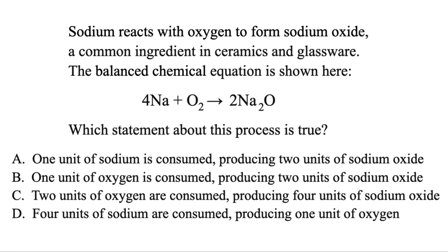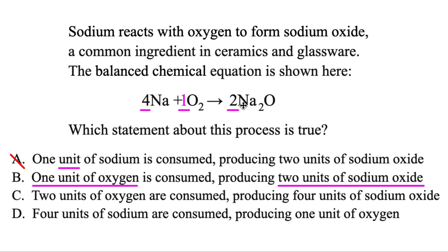Here we're given a chemical reaction. We have sodium — that's the first thing. It reacts with oxygen, the second thing. And it forms sodium oxide. But they're all asking about units, and those are just the numbers in front. So sodium, there's four units of that. If there's nothing in front, it's always a one. So one unit of oxygen, and two units of sodium oxide. Then we're just looking to see which statement matches that. The one that matches is going to be B — one unit of oxygen on the left side is going to produce two units of sodium oxide on the right side.